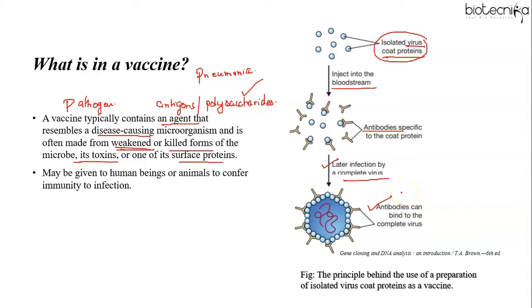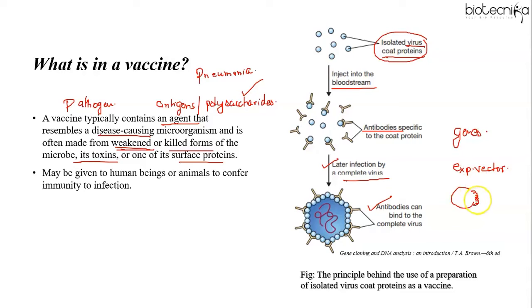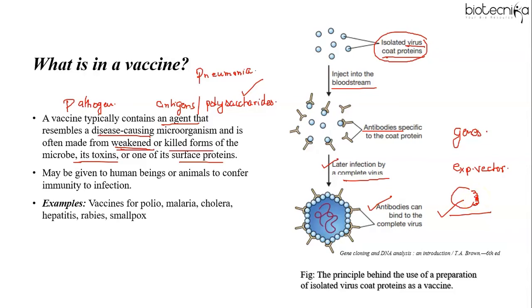Gene cloning and recombinant DNA technology have been used in the development of vaccines. Using these techniques, genes coding for antigenic proteins of a particular virus can be identified and inserted into an expression vector. This expression vector can then be used for production of recombinant proteins used as vaccines. These vaccines have the advantage of being free of intact virus particles and can be obtained in large quantities. A number of vaccines have been synthesized through recombinant DNA technology and are effective against numerous serious diseases caused by bacteria, viruses, or protozoa.